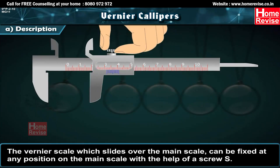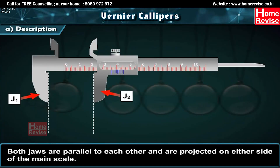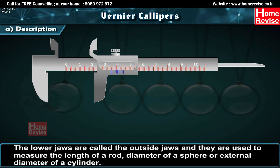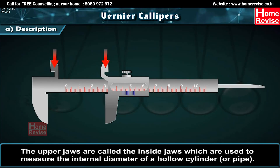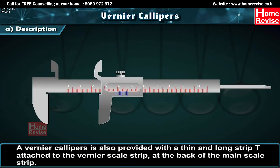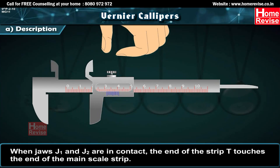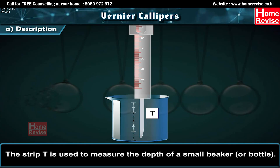The Vernier scale slides over the main scale and can be fixed with screw S. Both jaws are parallel and projected on either side. The lower outside jaws measure length, sphere diameter, or external cylinder diameter. The upper inside jaws measure the internal diameter of a hollow cylinder or pipe. A thin strip T attached to the Vernier scale slides with it and is used to measure the depth of a small beaker or bottle.